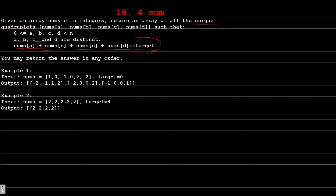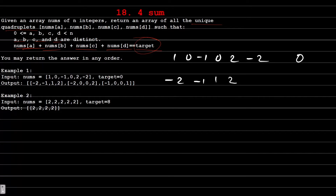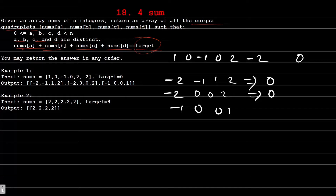Let's go to the examples. In test case 1, we have given an array [1, 0, -1, 0, 2, -2] and target equal to 0. There are 3 quadruplets: [-2, -1, 1, 2] whose sum is 0, [-2, 0, 0, 2], and [-1, 0, 0, 1]. These are the 3 quadruplets that can be made using this array.